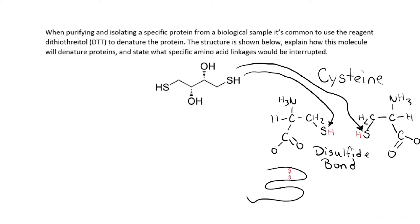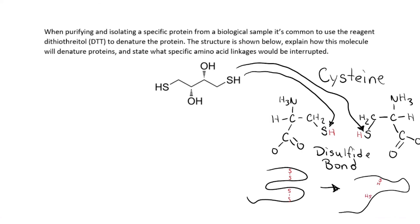Those disulfide bonds were holding the protein in its shape. Now what you have is reduced sulfurs, and the protein can actually come apart — which we call denaturing. That is how DTT works on denaturing proteins.